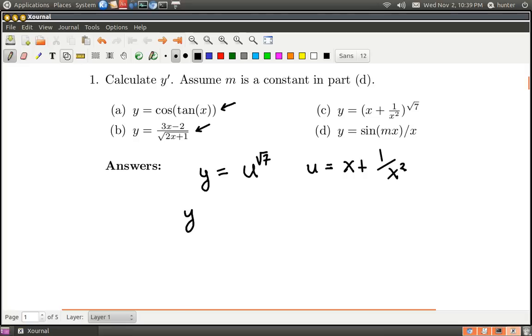Okay, and so what is y prime here? It is going to be square root of 7 times u. Now I have to do this really ugly thing. You take 1 away. What is square root of 7 take away 1? It's just this horrible thing. And so here I write u prime. Okay, and all I have to do now is plug in the stuff. So what was u again? u was x plus 1 over x squared. And so this is the new exponent. And what is u prime?